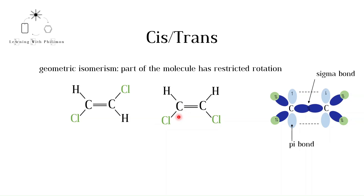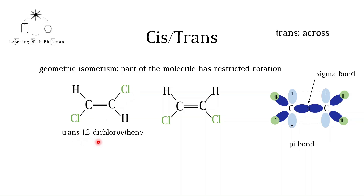To distinguish between the isomers, they are given different names. To do this, we consider the atom or group of atoms bonded to the carbon atoms — note that we are not looking at the hydrogen atoms. In this case we have chlorine atoms. When the chlorine atoms are on opposite sides of the double bond, we add the prefix trans, so this isomer is called trans-1,2-dichloroethene. When the groups are on the same side of the double bond, we add the prefix cis, so this isomer is called cis-1,2-dichloroethene.